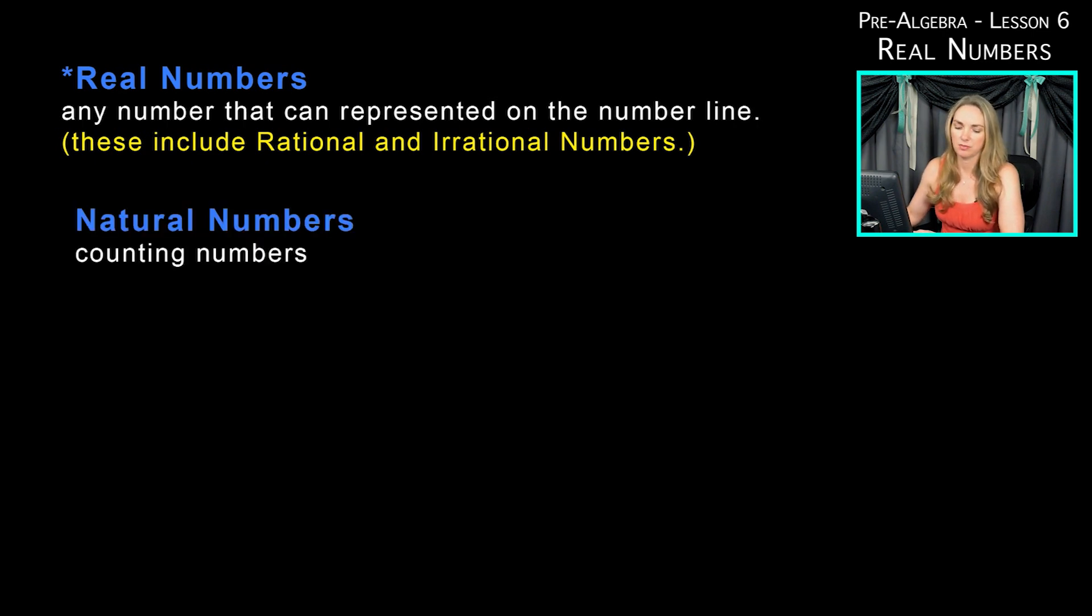Let's go over some different categories of numbers. The first is called natural numbers. Natural numbers are counting numbers—any number you recognize when you start counting: one, two, three, four, and so on. Those are your natural numbers.